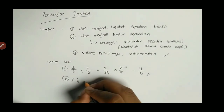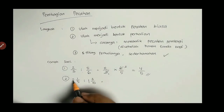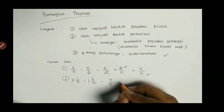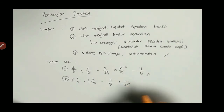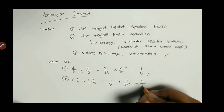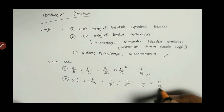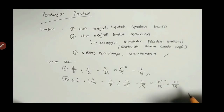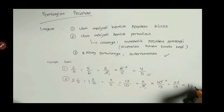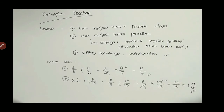Contoh berikutnya dengan pecahan campuran: 2 dan 1/5 dibagi 1 dan 3/10. Ubah menjadi pecahan biasa: 2 dan 1/5 = (5×2 + 1)/5 = 11/5. Dibagi 1 dan 3/10 = (10×1 + 3)/10 = 13/10. Ubah ke perkalian: 11/5 dikali 10/13 (pembagi dibalik). Sederhanakan 10 dan 5: bagi 5 hasilnya 2 dan 1. Jadi: 11 × 2 = 22, per 1 × 13 = 13. Diubah ke pecahan campuran: 1 dan 9/13.